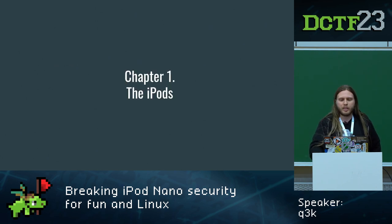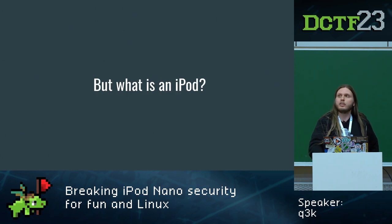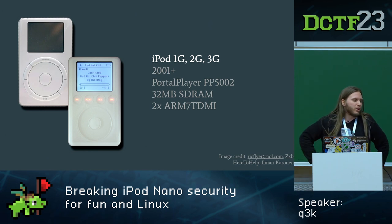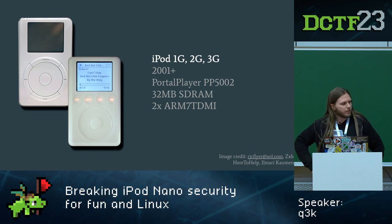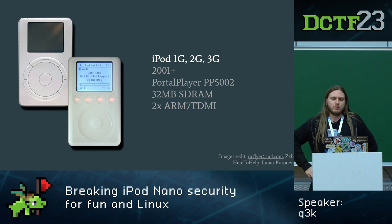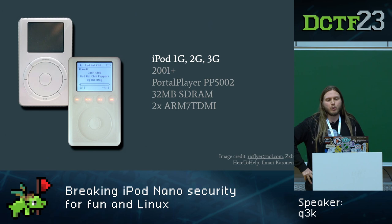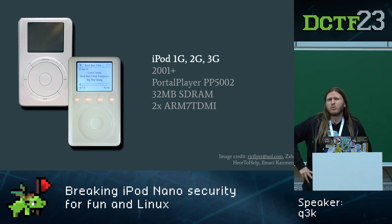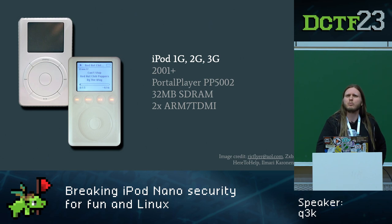Before we talk about iPods, we must answer an important question: what is an iPod? The best way to explain that is to show you one. This is the first, second, and third generation of iPods that came out in 2001. Apple put them out as effectively the first usable digital multimedia player with a big hard disk. They were based on a Portal Player system-on-chip running two ARM7 cores and a whopping 32 megs of SDRAM, at around 60 MHz each.